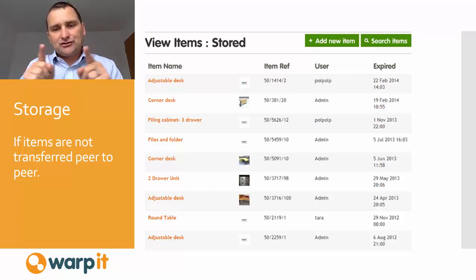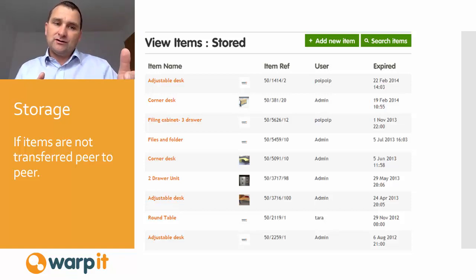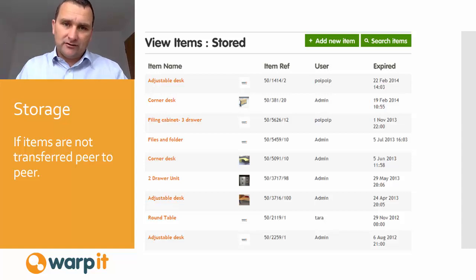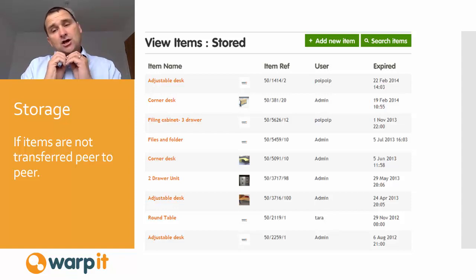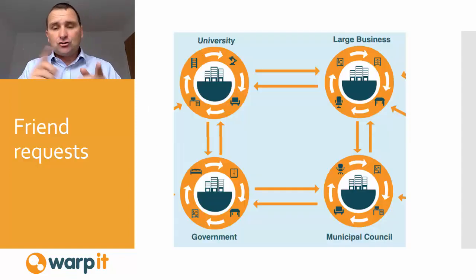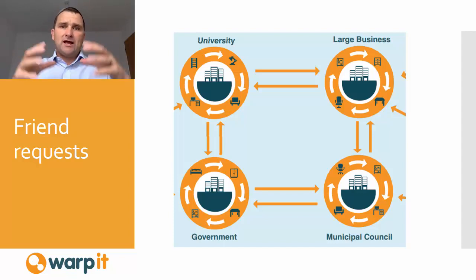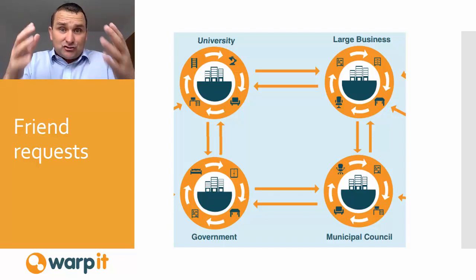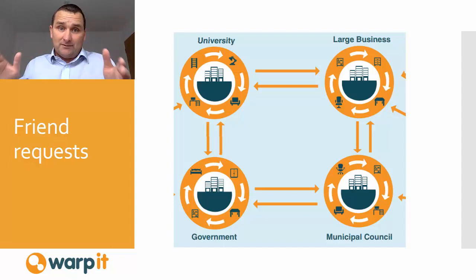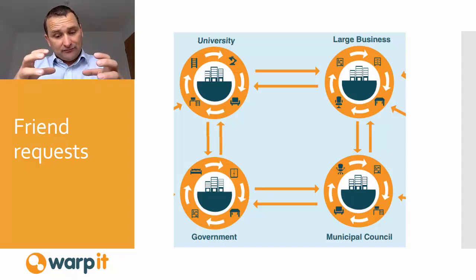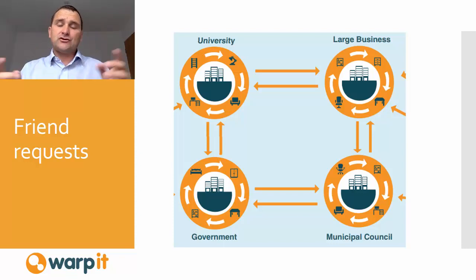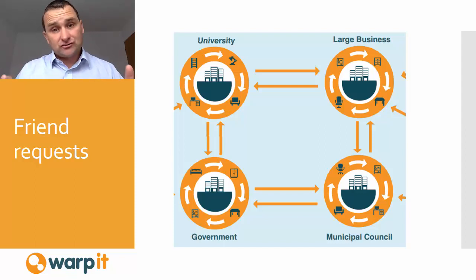If the asset isn't traded peer-to-peer internally, we link in with your logistics or transport systems and you can move the asset into store if you have one, where it can be claimed by other staff. If you don't have a store, you can start to trade assets across organizational boundaries — moving from internal to external reuse. There are legal requirements involved, but we have a legal framework whereby you can donate and trade surplus assets with other organizations on the system, including the bigger players in your region and across the country.